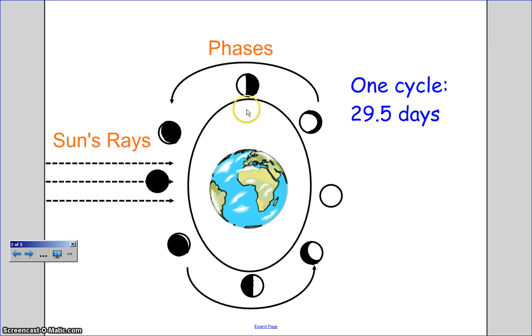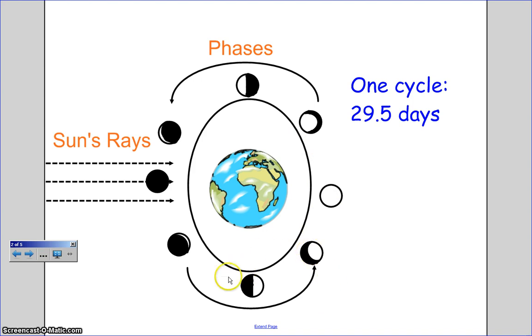This is a waning quarter moon. This is a waning gibbous moon. This is a full moon. This is a waxing gibbous moon. This is a waxing quarter moon. This is a waxing crescent moon, a new moon, and a waning crescent moon.